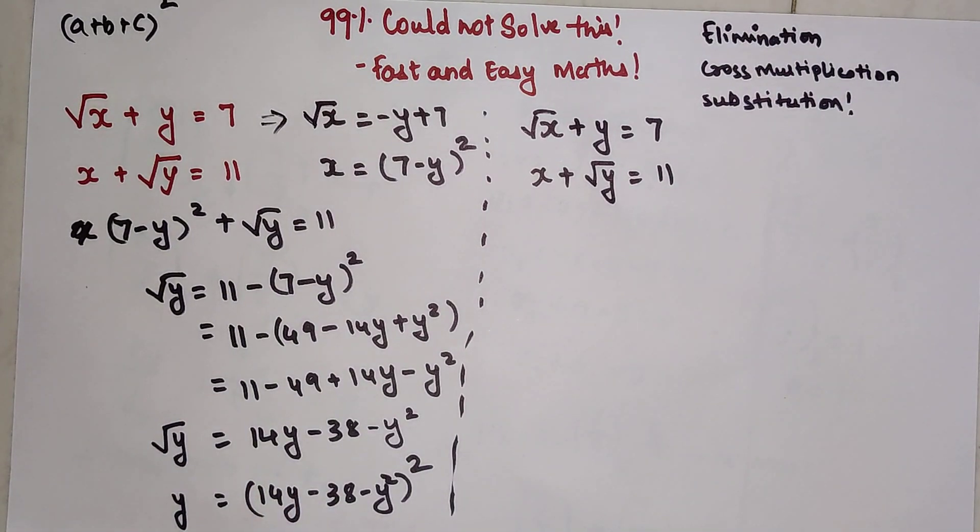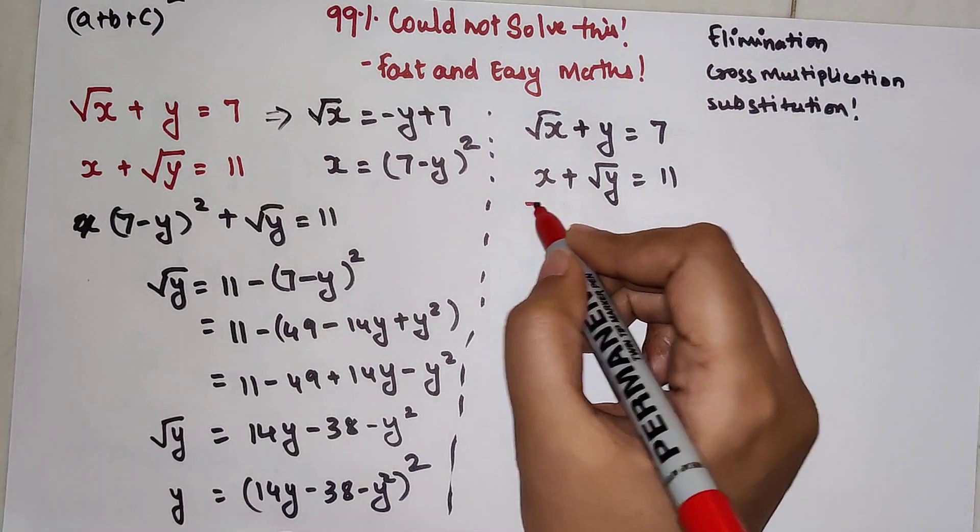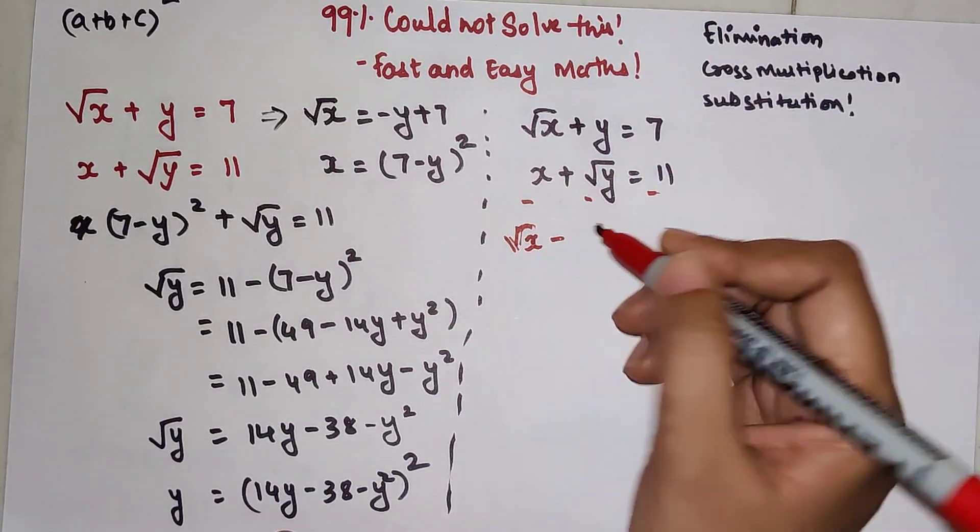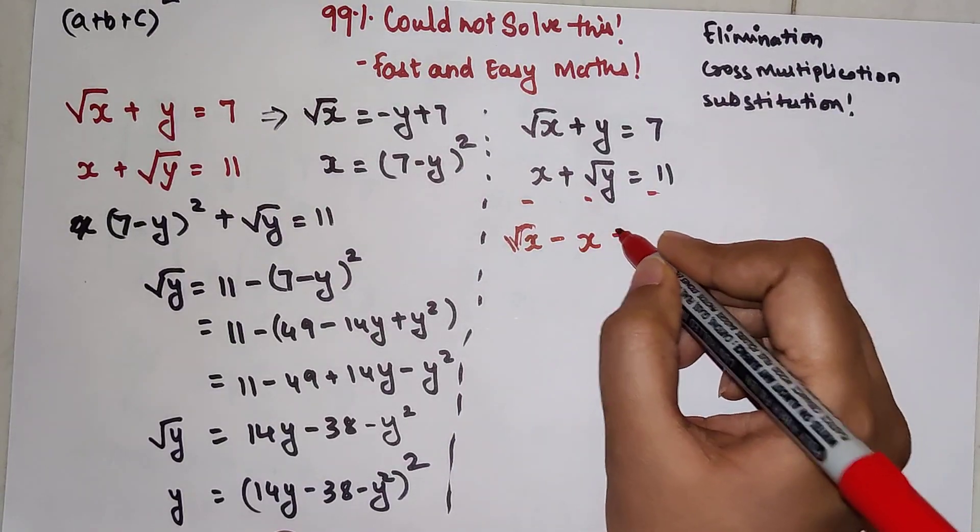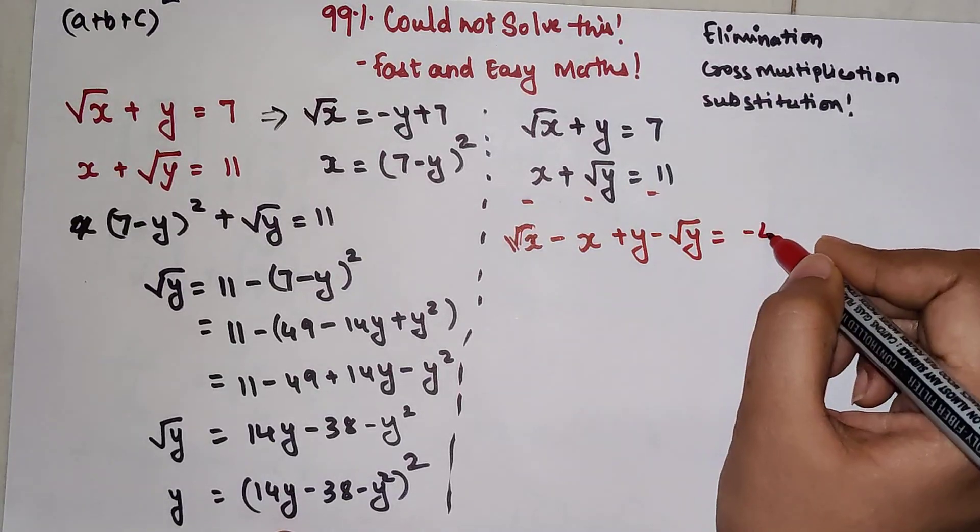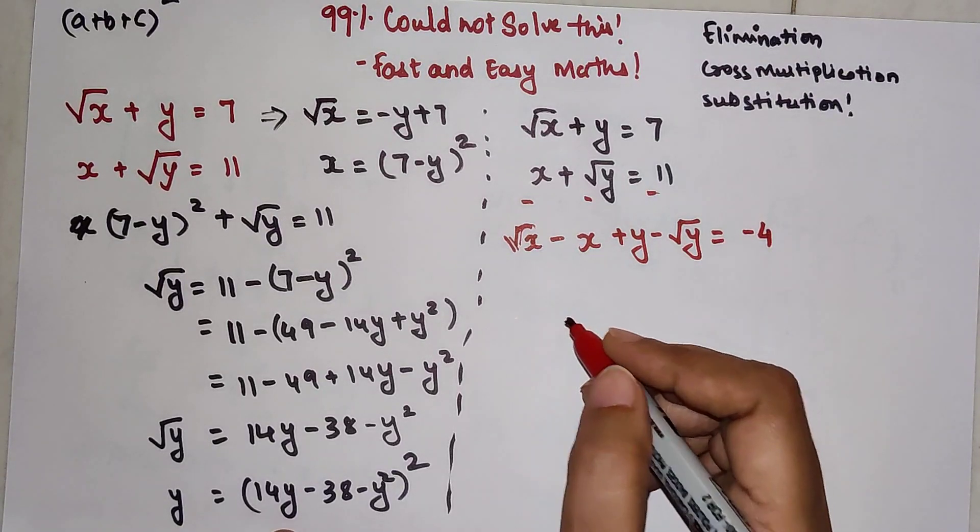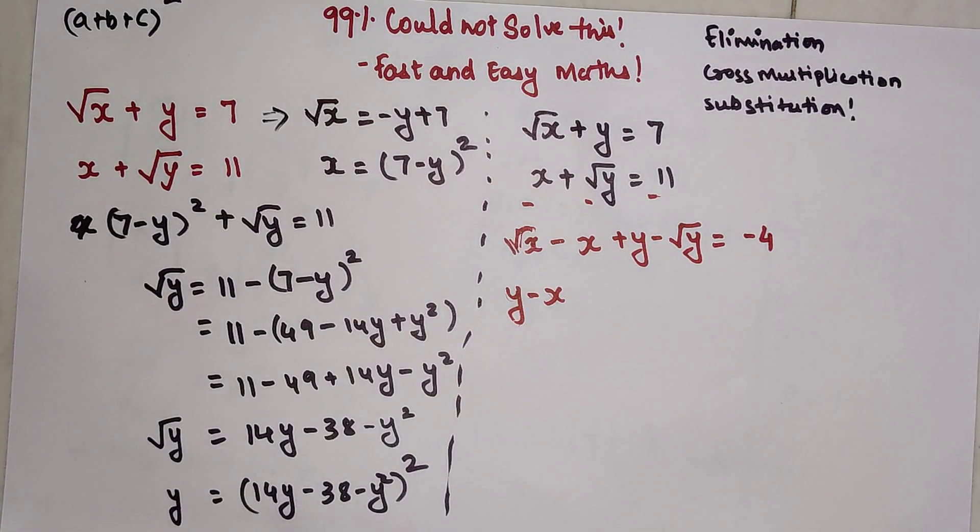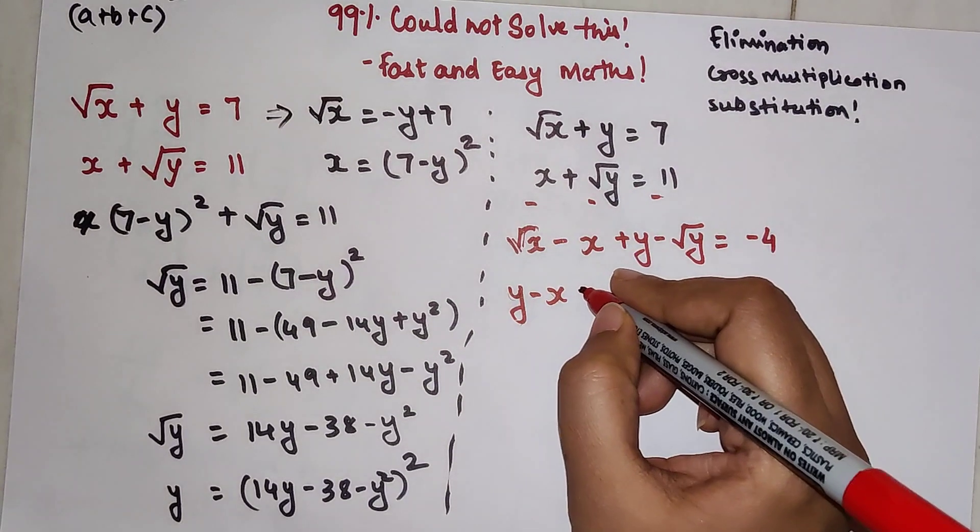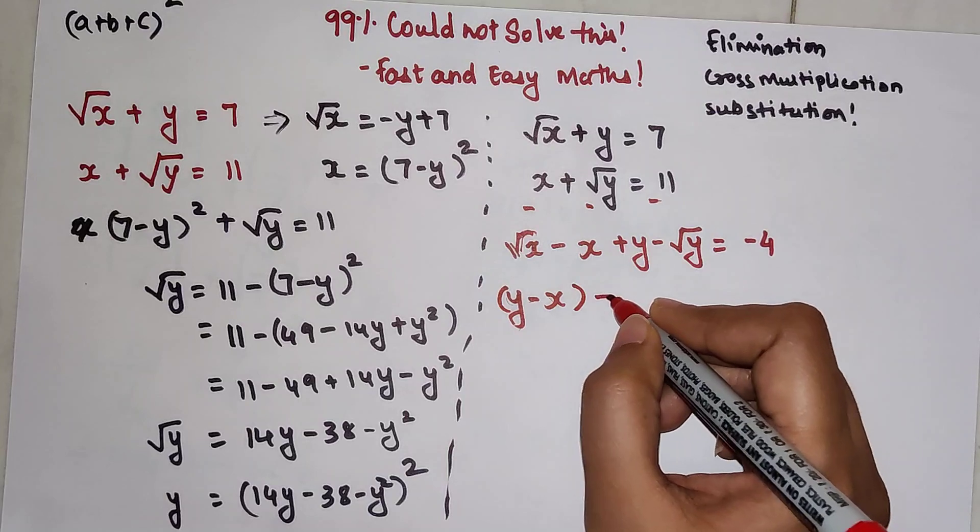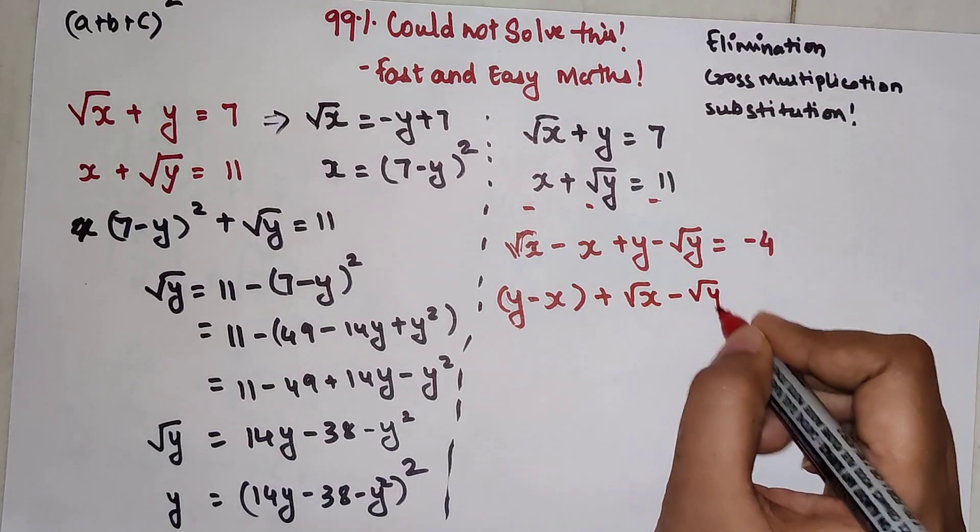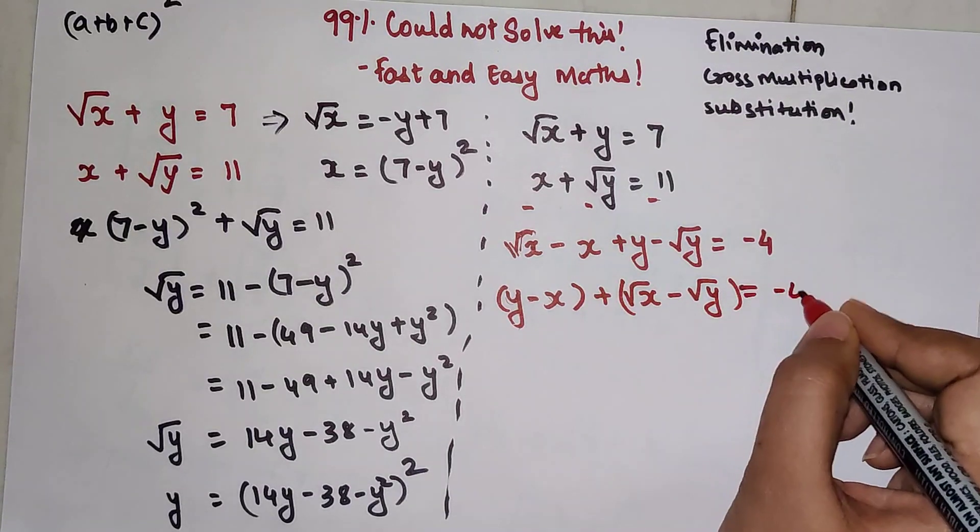Let's try subtracting them. If I'm subtracting, I get: root x minus x plus y minus root y equals minus 4. I can write this as y minus x plus root x minus root y equals minus 4.